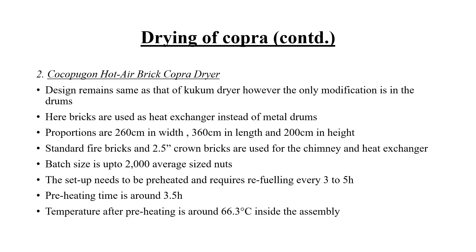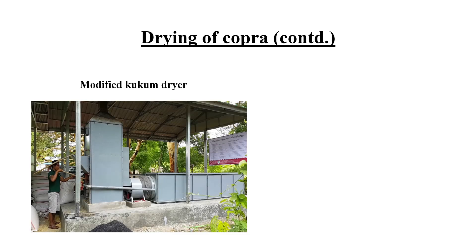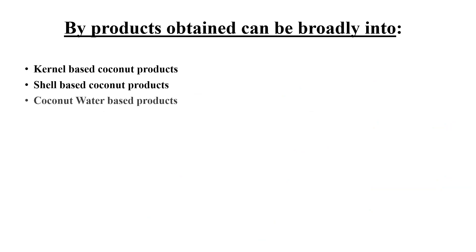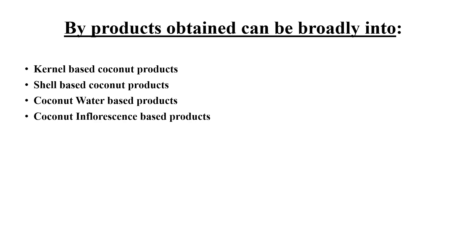The Kukum hot air brick copra dryer differs from the previous one in that the drying chamber is made of bricks instead of metal. The proportions are 260 cm in width, 360 cm in length, and 200 cm in height. This setup needs to be preheated for about 3.5 hours, and the temperature after preheating should be around 66.3 degrees Celsius inside the chamber. The types of by-products from coconut can be classified on four bases: kernel-based, shell-based, coconut water-based, and coconut inflorescence-based.